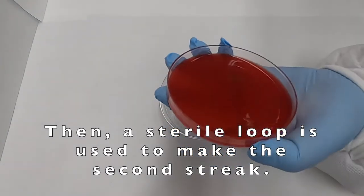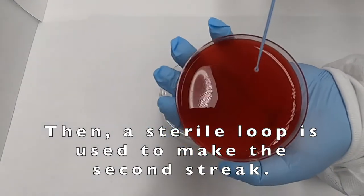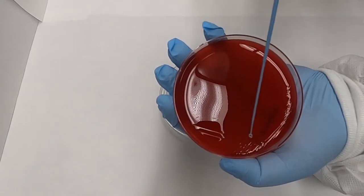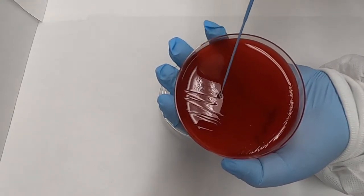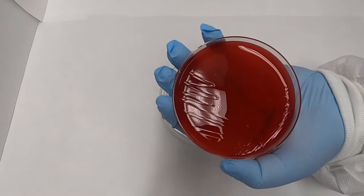We then use a new loop to make our secondary streak. We start by going back and forth across the agar surface two to three times into our primary streak and then extending outwards.